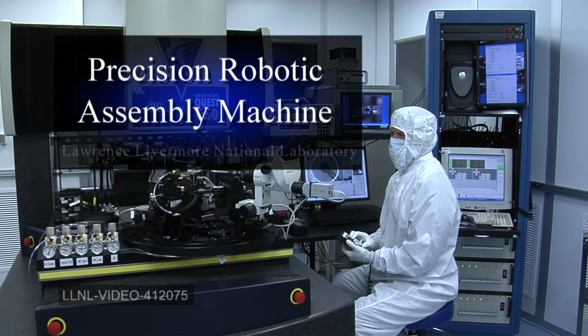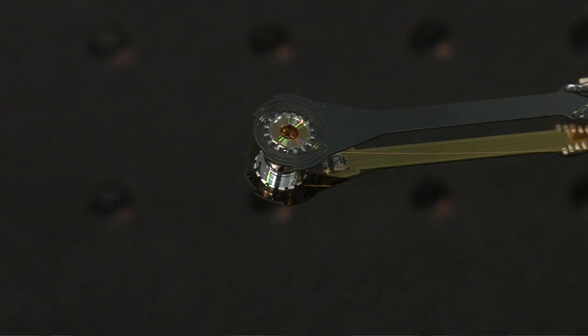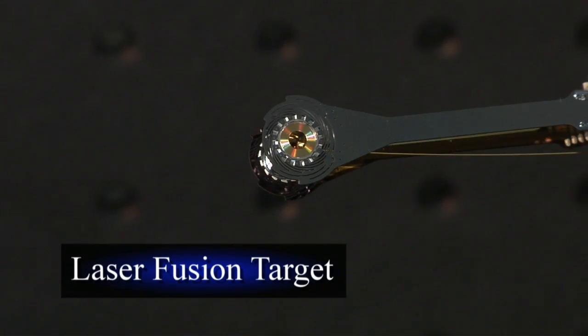This video shows the precision robotic assembly machine building a laser-driven fusion ignition target. The target has a tiny fuel capsule contained in a small gold cylinder the size of a pencil eraser.